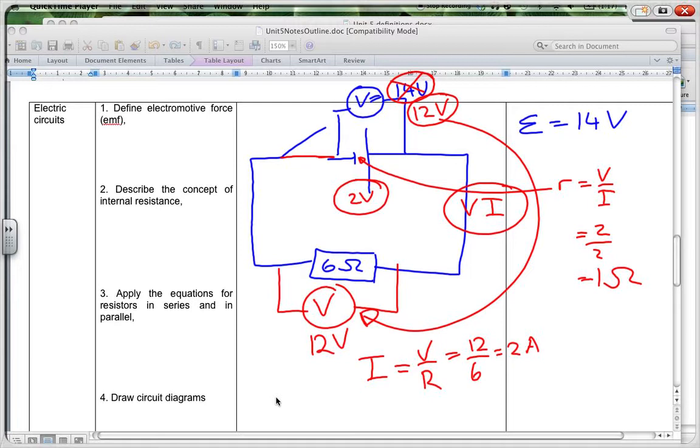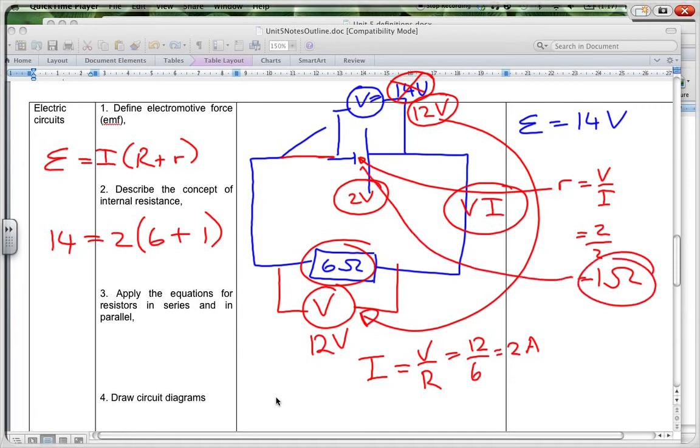So my overall formula, which is E is equal to I big R plus R would be, the 14, that's my EMF, is equal to the 2, 2 amps, times 6 plus 1. There's my 6 ohms there. There's my 1 ohm there. That's the internal resistance there. And that, those two are equivalent, 14, 14 volts.